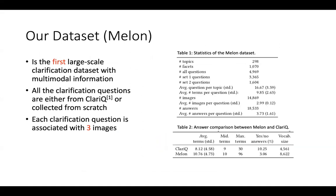We propose a dataset called Mellon based on this task. Mellon is the first large-scale clarification dataset with multimodal information. All clarification questions are either from an existing clarification dataset called ClaryQ or collected from scratch, and each clarification question is associated with three images. This table shows the statistics of the Mellon dataset, and the lower table shows the answer comparison between Mellon and ClaryQ.